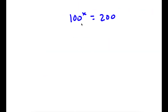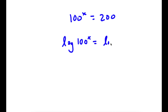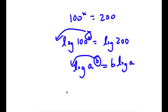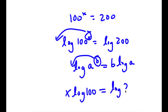In this problem, I have 100 to the power of x is equal to 200. To solve this, I'm going to first take the log on both sides. So now I have log of 100 to the power of x is equal to log 200. Now, if I have something in the form log a to the power of b, I can move this exponent b to the front. So now I have x times log 100 is equal to log 200.